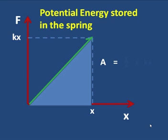Now look at this carefully, then. One half the base times the height, x times kx, the area is one half kx squared. And that, then, would be the potential energy stored in the spring.